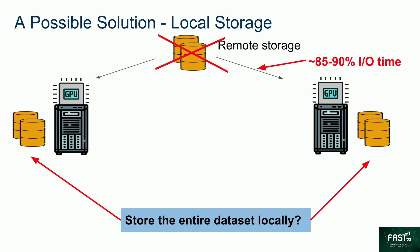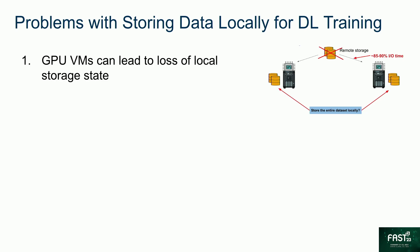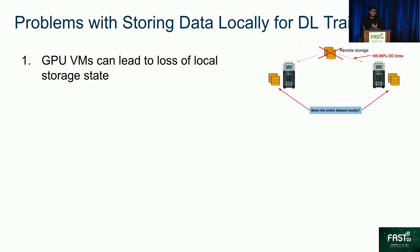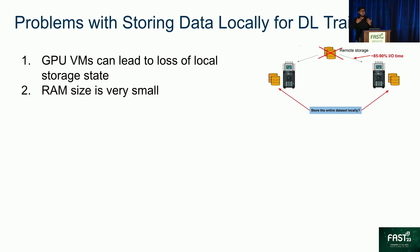Since fetching the data from the remote storage is taking up a lot of time, let's maybe store the entire dataset locally. But this leads to problems. Firstly, deep learning is conducted using GPUs, and these GPUs are expensive. Hence, deep learning applications are run using GPU spot VMs, which are preemptive, meaning they can be terminated at any time. This would lead to the loss of local storage state, requiring us to download the entire training dataset again and again — and these training datasets are large, spanning terabytes. Secondly, RAM is expensive and hence small in size, insufficient to store large training datasets.